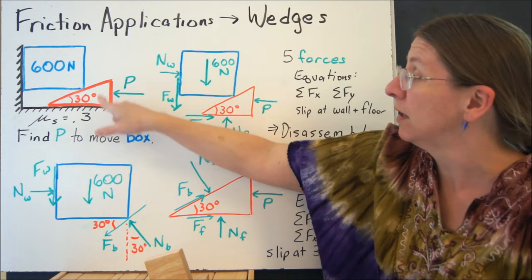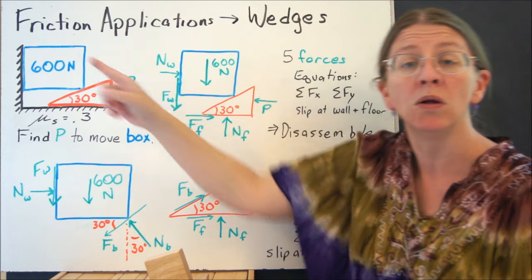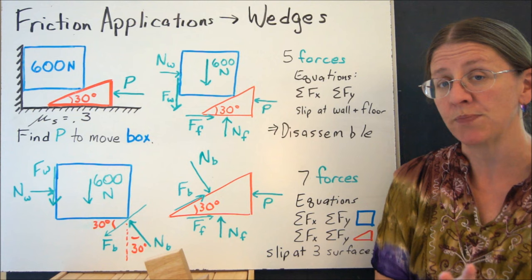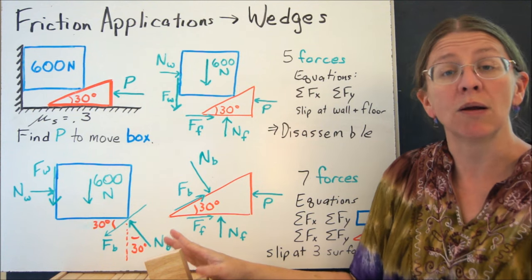In fact, it would have to slip at three spots. It would have to slip here, it would have to slip here, and it would have to slip at the wall. So now I have enough equations as long as I haven't added too many unknowns.